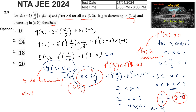So α = 9/4, and 8 times α = 8 times 9/4 = 18. So the answer is 18.